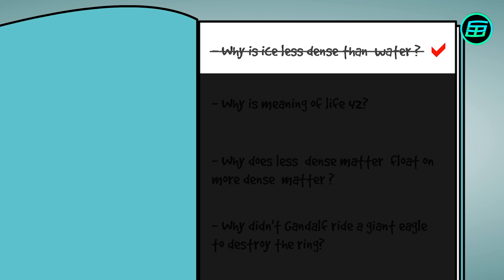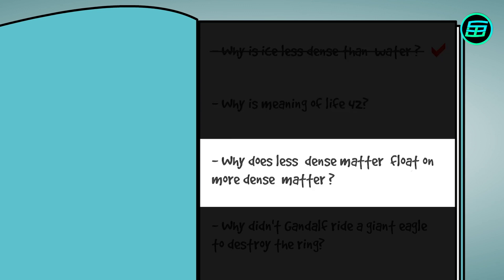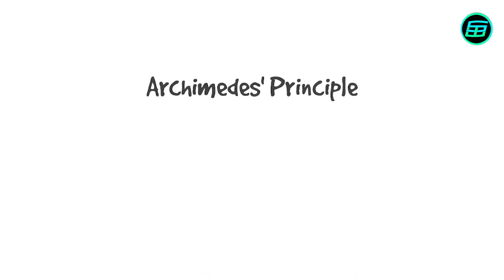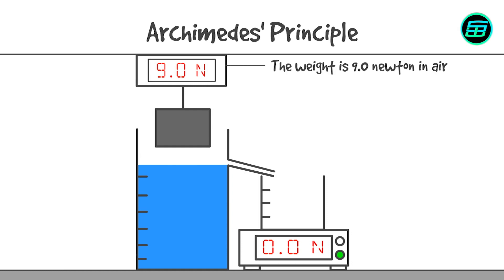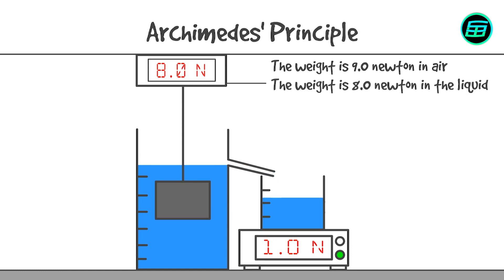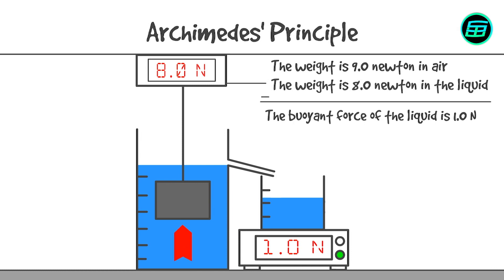Moving on to the second question: why does less dense matter float on more dense matter? In order to answer this, we need to understand Archimedes' Principle. This states that when an object is completely or partially immersed in a fluid, the fluid applies an upward force, called a buoyant force or buoyancy, on the object. This force is equal to the weight of the fluid displaced by the object.